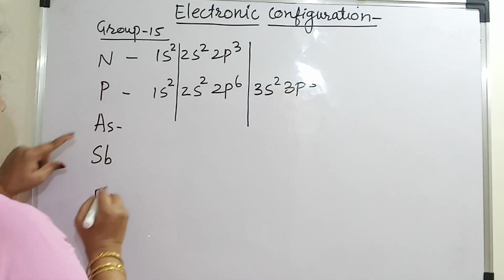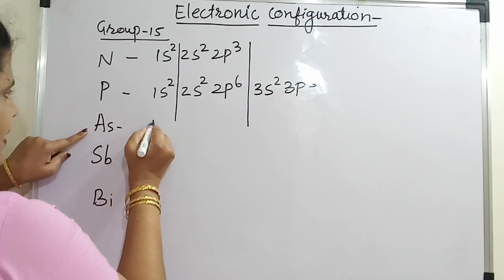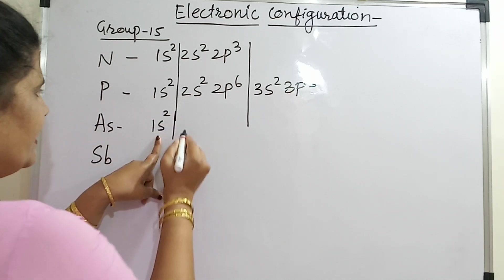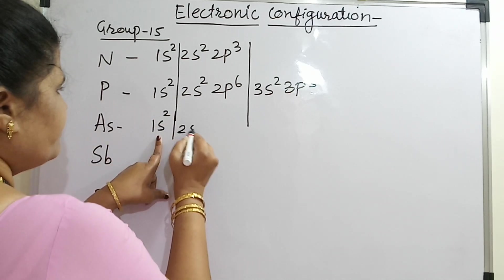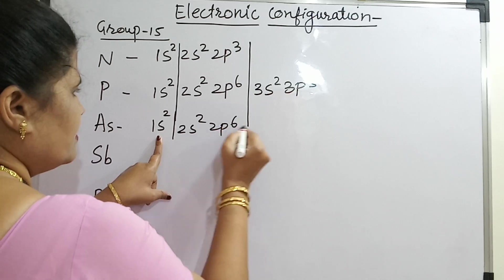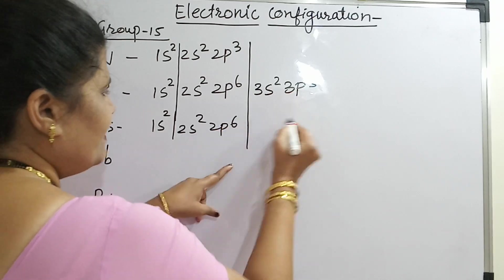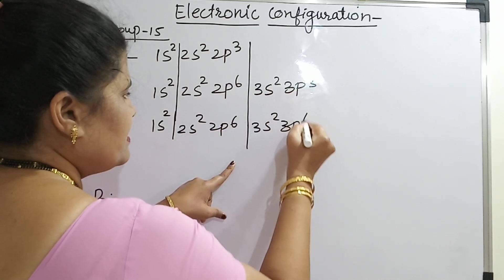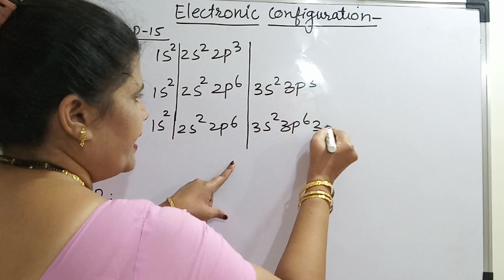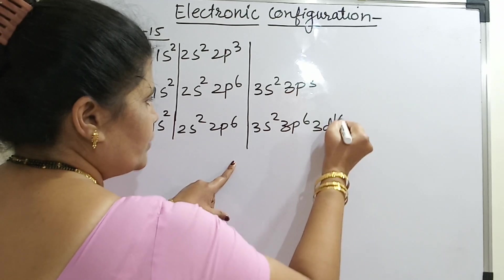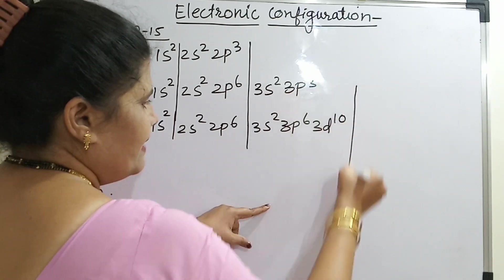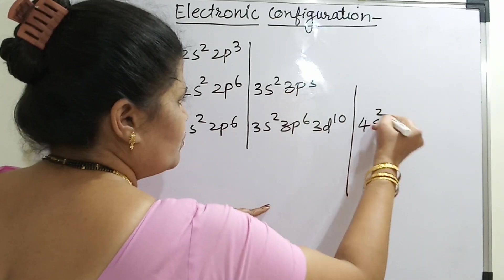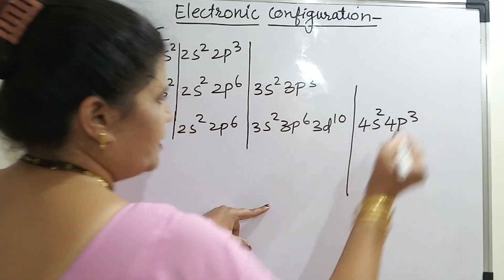For arsenic, it will be 1s2 — this will be completely filled — then 2s2 and 2p6. I will completely fill that now: 3s2, 3p6. That is 3d also, so it will be 3d10. And I will end up with 4s2 and 4p3.